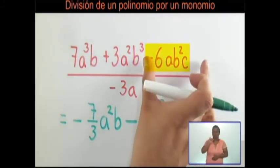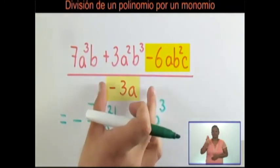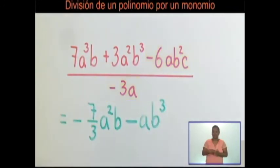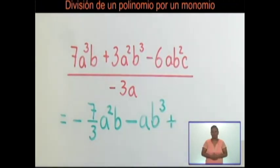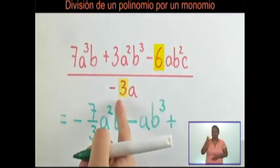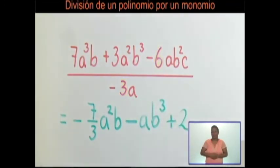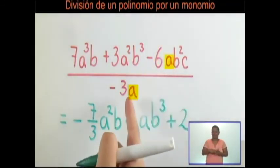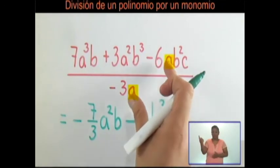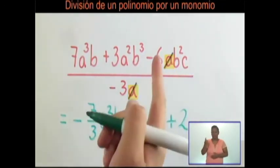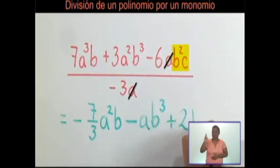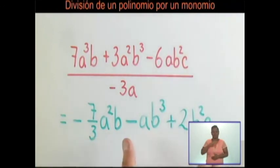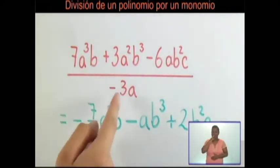Tomamos el tercer término del polinomio y lo dividimos por el monomio. Aplicamos ley de signos: menos con menos es más. Dividimos los coeficientes: 6 entre 3 = 2. Dividimos las variables: a entre a, como es la misma letra con exponente 1 cada una, se cancelan. Por lo tanto, solo quedan las variables restantes: b al cuadrado c. Este resultado es la respuesta de realizar esta división.